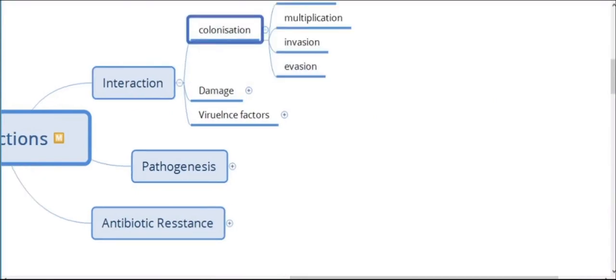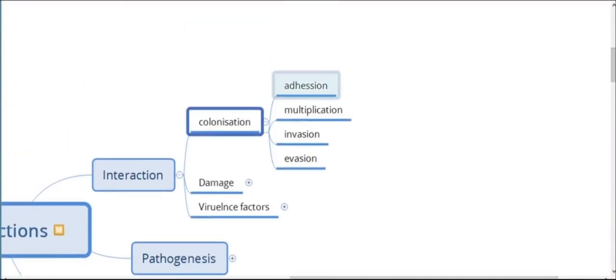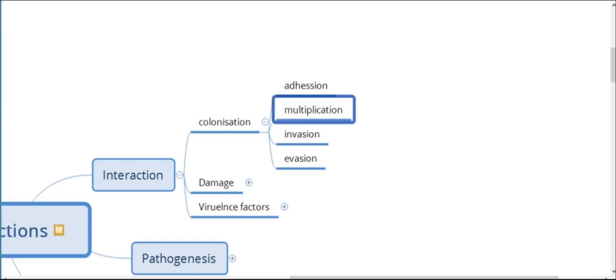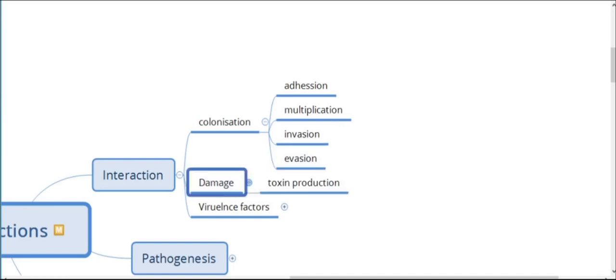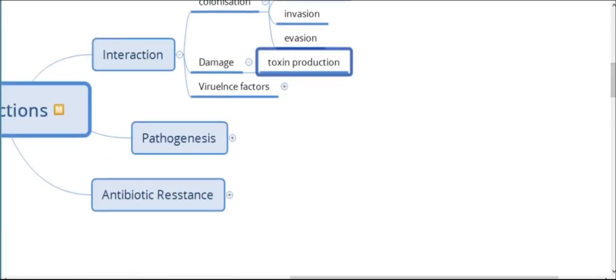Bacteria interact with the host by colonization. The process of colonization initially involves adhesion onto the target cell or surface, then multiplication to establish the primary colony, then invasion by breaching the primary lines of defense, further evading the immune responses from the host, and exerting damage onto the cell either by killing it or rendering it incapable of processing or degrading the invading pathogen.